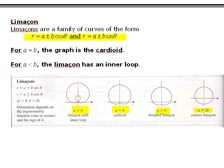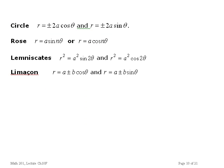Now I want to put all these together to see the progression. Here are the equations for the circle: r equals plus or minus 2a cosine theta or sine theta. For roses: r equals a times the sine of n theta — if n is even, the rose has 2n petals; if n is odd, n petals. Lemniscates: r squared equals a squared times the sine of 2 theta. Limaçons: r equals A plus or minus B times cosine theta. Looks fairly similar to a circle, but the additional constant A makes all the difference.